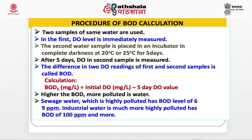Procedure of BOD calculation: Two samples of the same water are used. In the first, the DO level is immediately measured. The second water sample is placed in an incubator in complete darkness at 20°C or 25°C for 5 days. After 5 days, the DO of the second sample is measured. The difference in DO readings of the first and second sample is the BOD: BOD5 (mg/L) = initial DO (mg/L) − 5-day DO value. Higher BOD indicates more polluted water. Sewage water has a BOD of 6–9 ppm; industrial water has a BOD of 100 ppm or more.